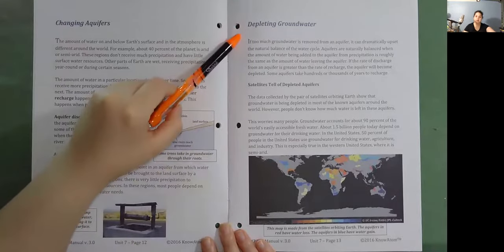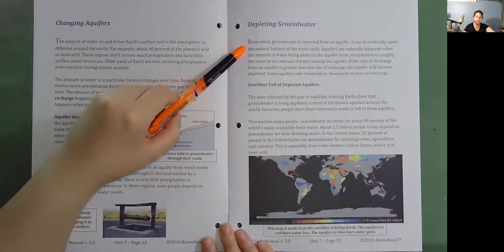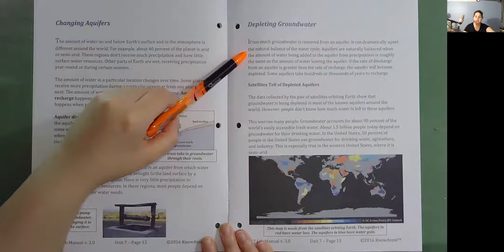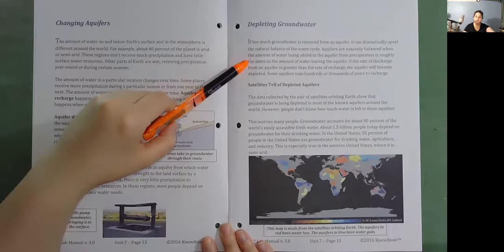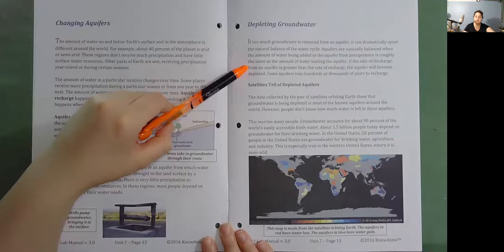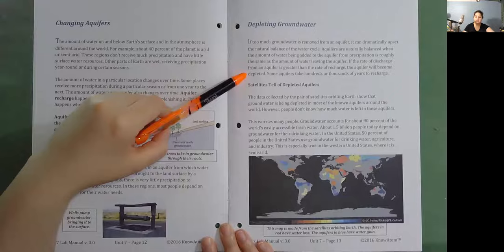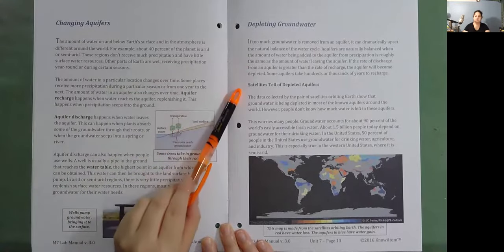Depleting groundwater. If too much groundwater is removed from an aquifer, it can dramatically upset the natural balance of the water cycle. Aquifers are naturally balanced when the amount of water being added to the aquifer from precipitation is roughly the same as the amount of water leaving the aquifer. If the rate of discharge from an aquifer is greater than the rate of recharge, the aquifer will become depleted. Some aquifers take hundreds or thousands of years to recharge.